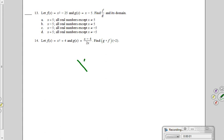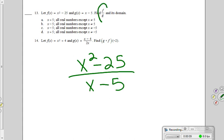F of x is x squared minus 25. G of x is x minus 5. They want us to find f divided by g and its domain.